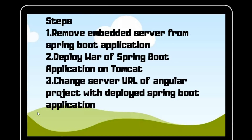We are following three steps in this process. The first step is to remove the embedded server from the Spring Boot application. The second step is to deploy the WAR of the Spring Boot application on Tomcat, because the default packaging of Spring Boot is JAR — we will change it to WAR. The third step is to change the server URL for the Angular project to the deployed Spring Boot application, and then deploy the Angular project on the same Tomcat.